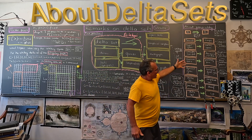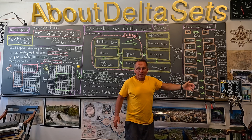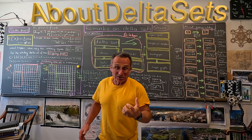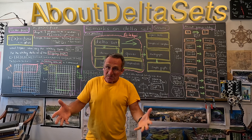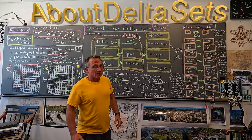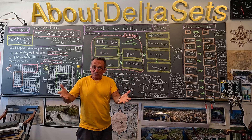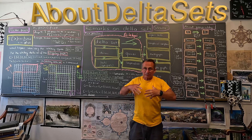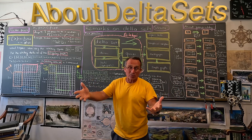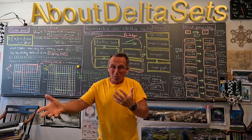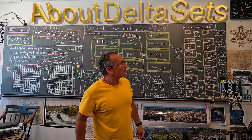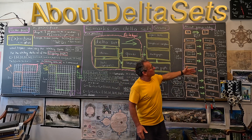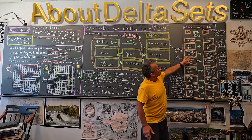I wanted to say something about generality — what do we actually mean when we say more general for a category? It's not only that the objects have to be contained in each other, but also the morphisms. That's also part of a category.